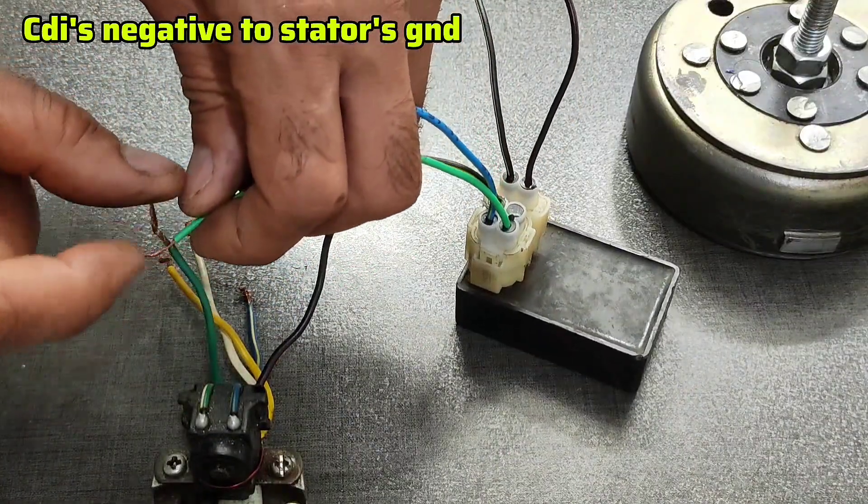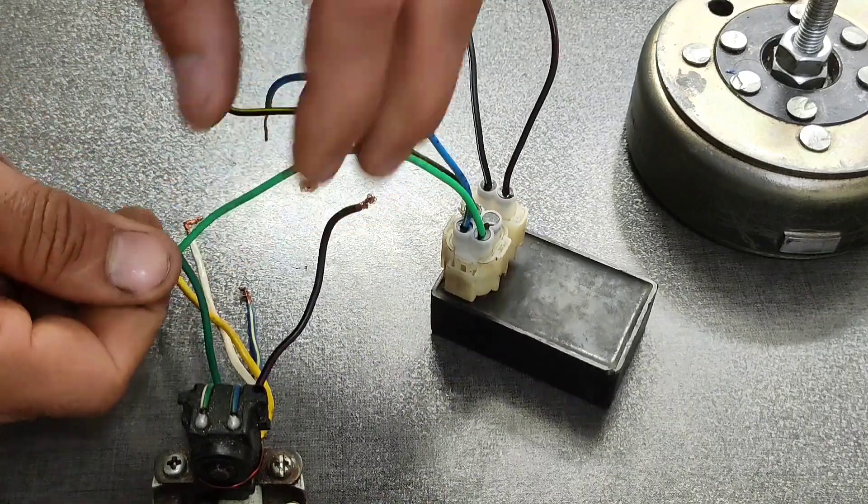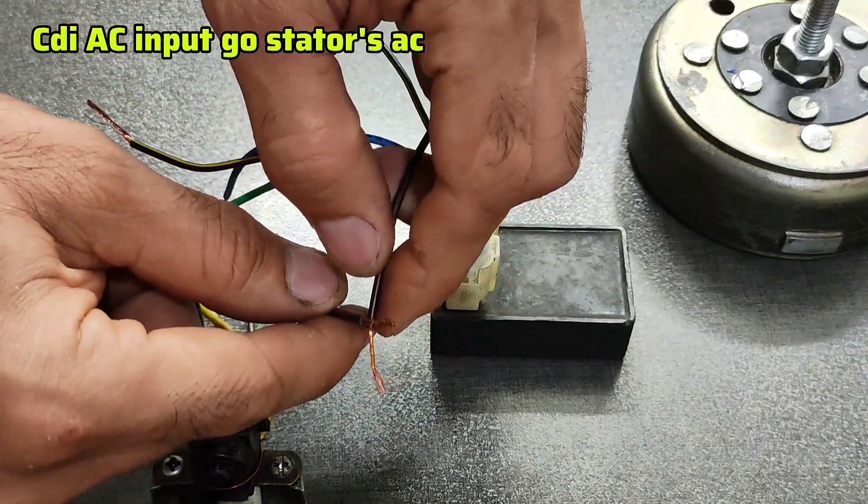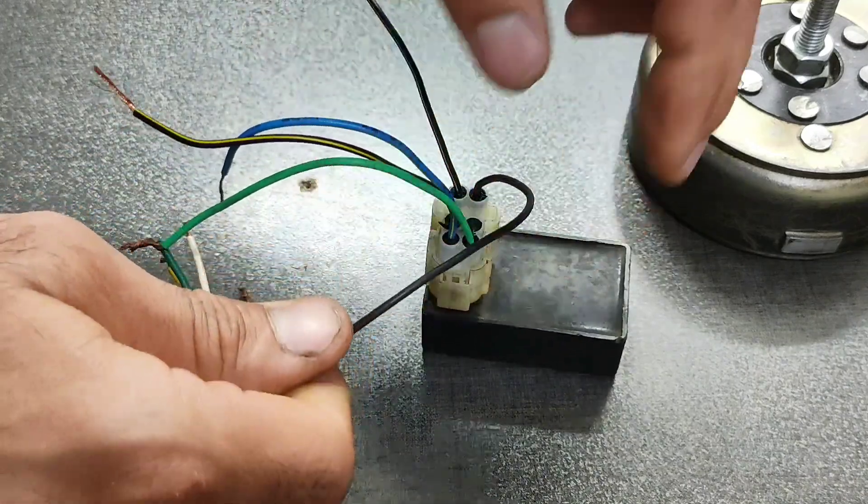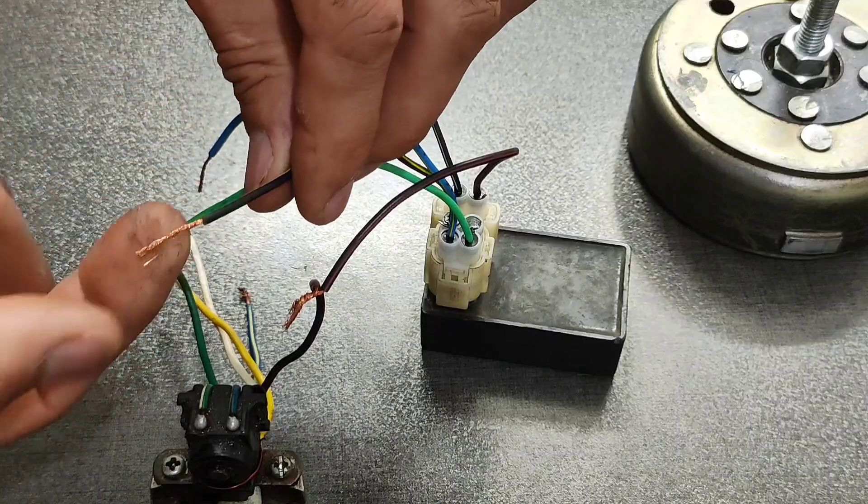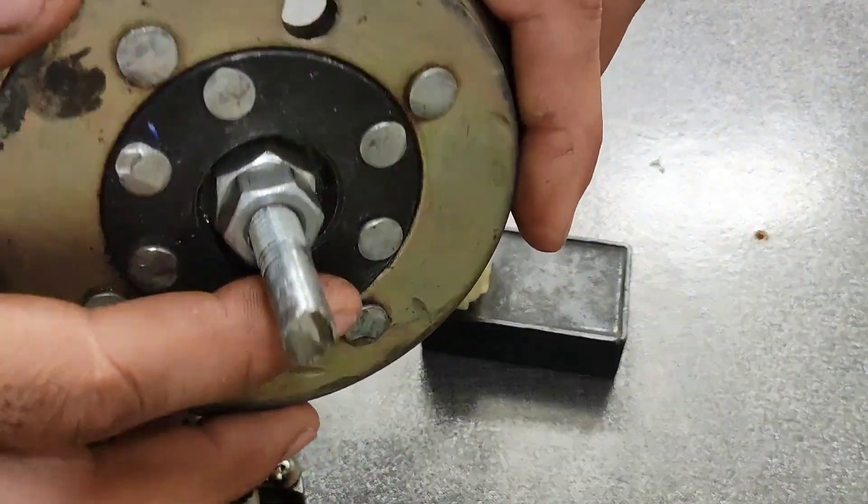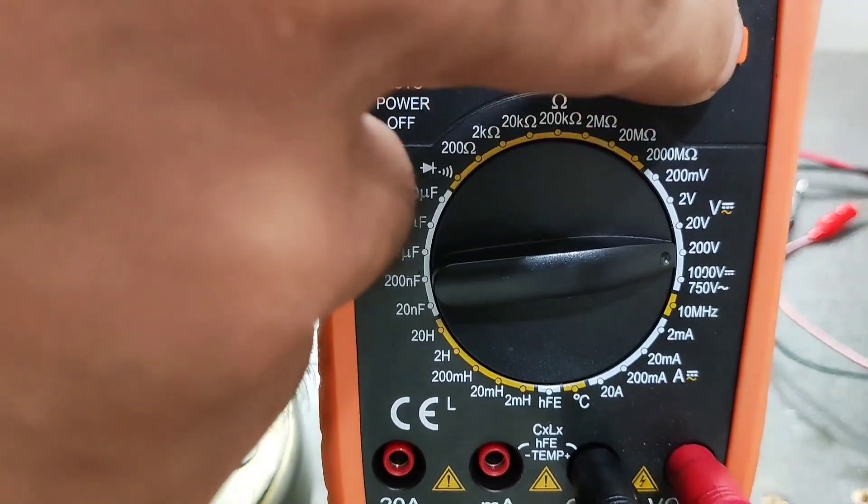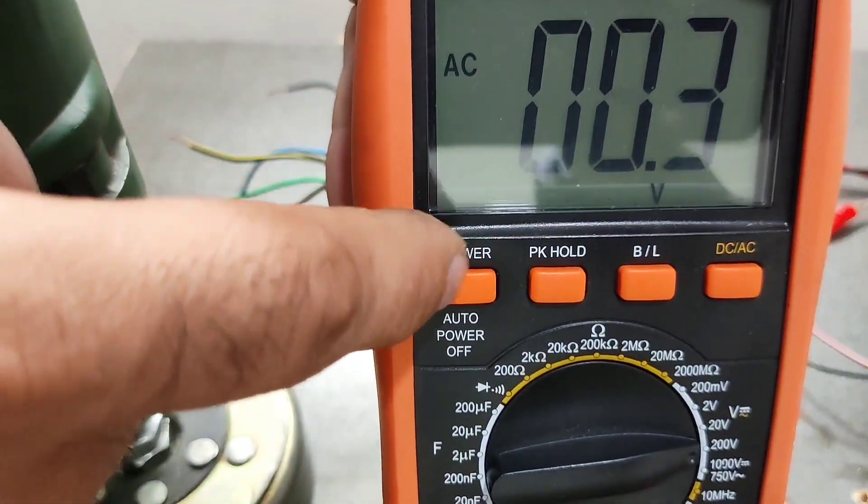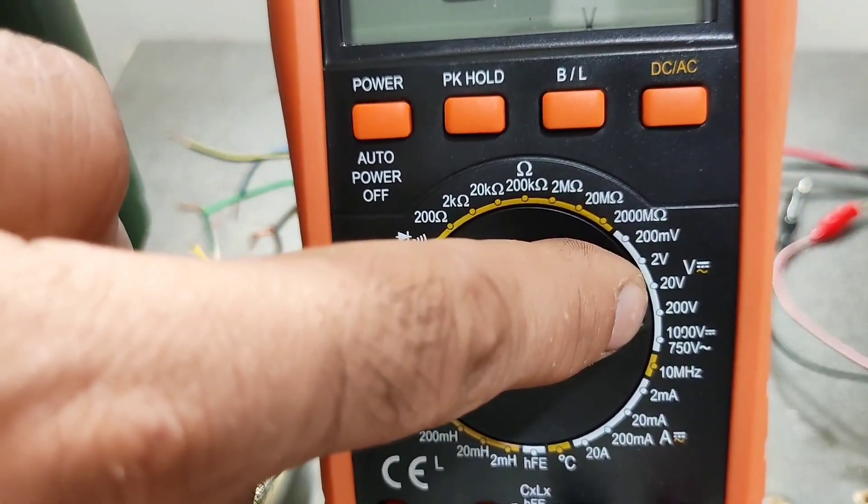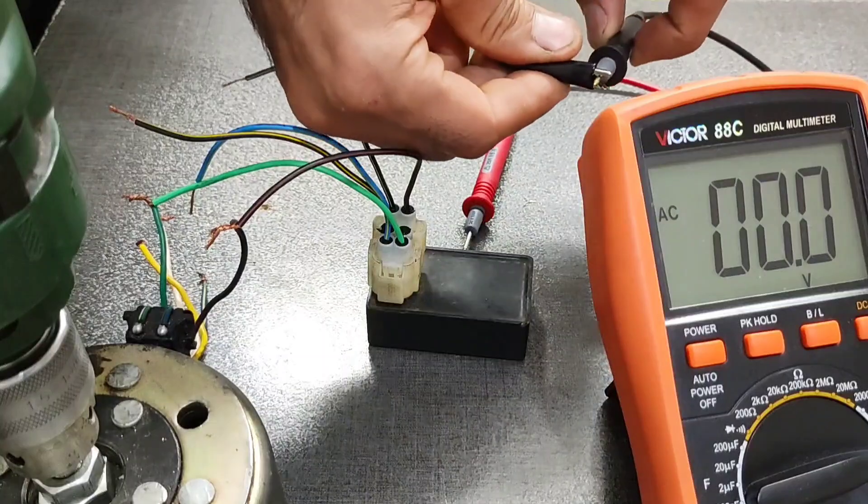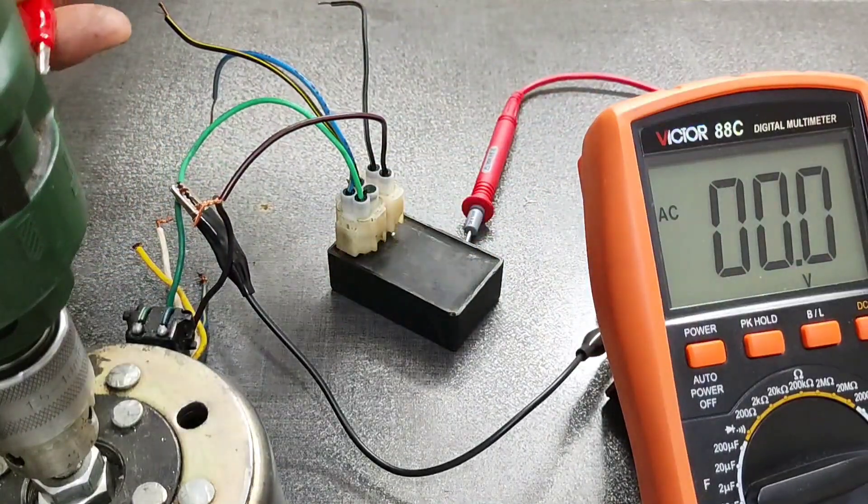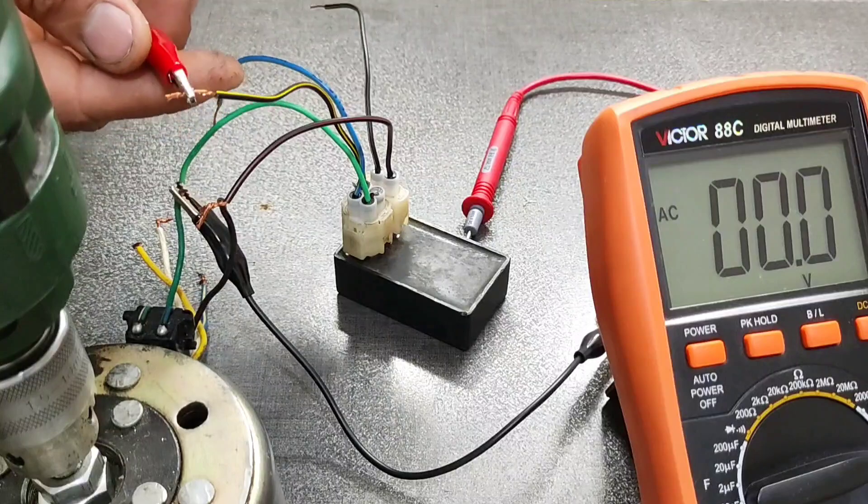First we need to fix the stator on the board and connect the CDI to it. Negative of CDI goes to the negative of the stator, and AC power with the AC coil in the stator. That's it. Now we can measure the ignition coil output when we spin the flywheel on the stator with the drill. Set the multimeter on AC voltage 200. Negative probe goes to the negative and positive probe goes to the ignition coil output.